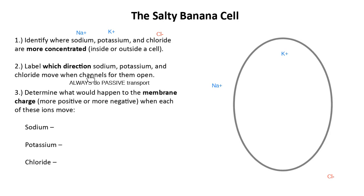Channel proteins always do passive transport. If we think back to unit one, we talked about carrier proteins — those were the ones that did active transport. With channel proteins doing passive transport, when we talk about the direction things move, it's all about concentrations — always going from high to low.